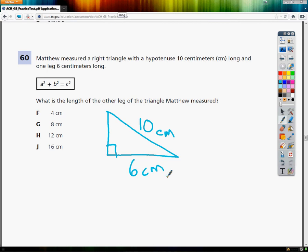What they want to know is what is the length of the other leg of the triangle Matthew measured. Now they were nice enough to put that a squared plus b squared equals c squared thing, the Pythagorean theorem, in a box for me. Anytime they do that, I'm going to give them the courtesy of writing it down on paper.